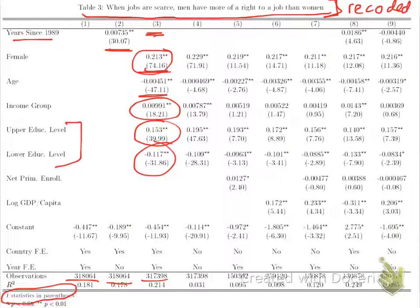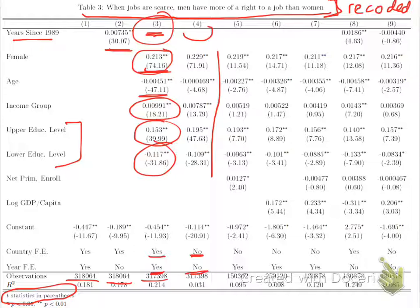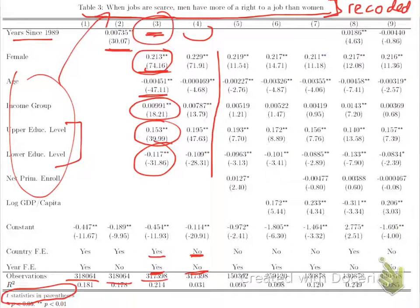Going down the different specifications, notice that the difference between specifications 3 and 4 is that 3 includes dummy variables for countries and for every year, while 4 does not include country dummy variables. We notice that the coefficients don't change very much, suggesting these are general correlations between the explanatory variables and the outcome variable, not particularly varying by country or reversing direction across countries.